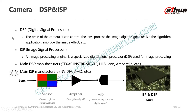The digital signal processor will do control of the lens, image digital signal processing, and algorithm functions. Algorithm functions apply to AI cameras. An example of a DSP digital signal processor is Silicon — which you can find in phones like Samsung, etc.